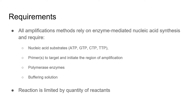Regardless of the system, there are some universal basic components. You need nucleic acid substrates, also called deoxynucleotide triphosphates, or dNTPs — the building blocks of your DNA amplicon. You need primers to target the sequence you wish to amplify and to begin the amplification process. You need polymerase enzymes that polymerize the substrates into the final amplicon product, and a buffering solution to make the molecular environment favorable.